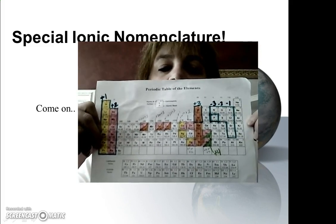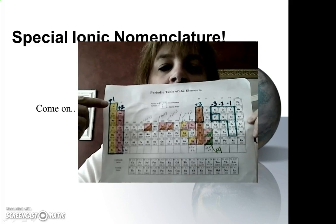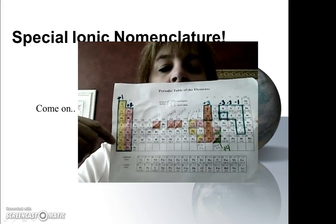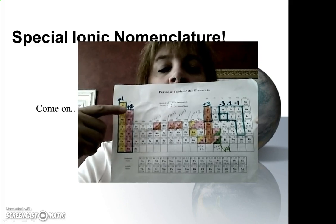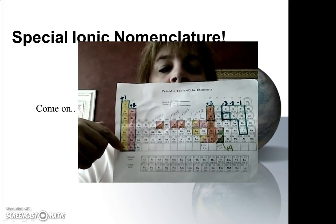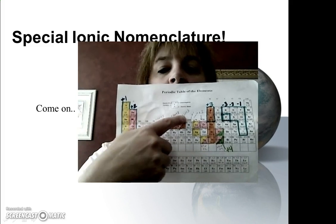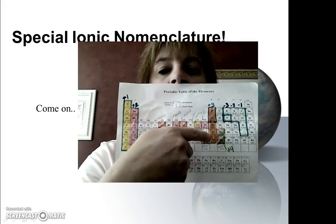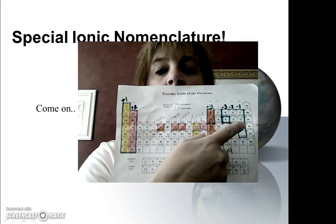Remember in our last ionic nomenclature, we looked at things that had specific charges. So everything in column 1 was plus 1, and I've colored that yellow. And everything in column 2 was plus 2, and I colored that pink. And then we go over here, and these things are positive 3, I made those orange. And then we have the minus 3, minus 2, minus 1.